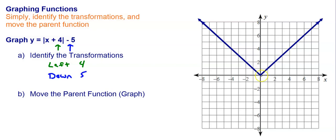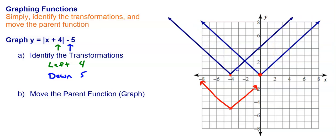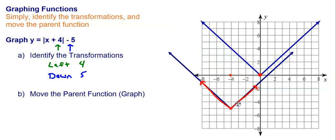So I take my vertex and I'm going to go left 4, and then I'm going to go down 5, and that's all the transformations, so my graph would be right there. What I'm doing is taking that parent function and literally moving it left 4, all of the points, and moving it down 5 in order to get the graph of my new function.